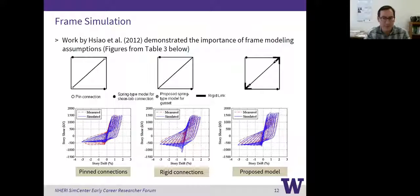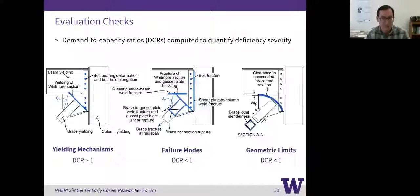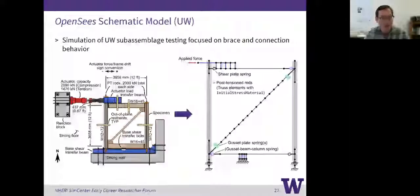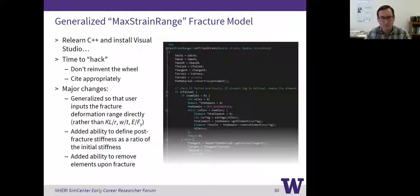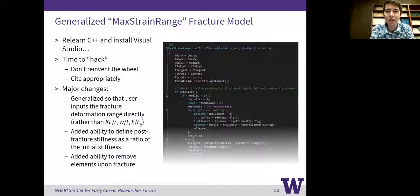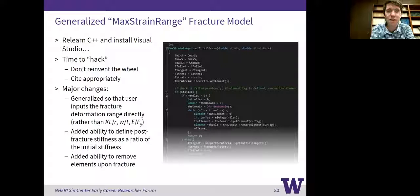There are some questions about the element removal command. One question is around the recorders associated with those elements — does the element remover command take out recorders? I haven't actually made recorders for those elements that I've been removing, but I believe because the element no longer exists in the domain, the recorder will just go blank and not record anything — though I haven't tested that case. Is there a specific name for the element removal command? There is a native command in OpenSees, and I think it's on the wiki, though I don't know the exact name of it.